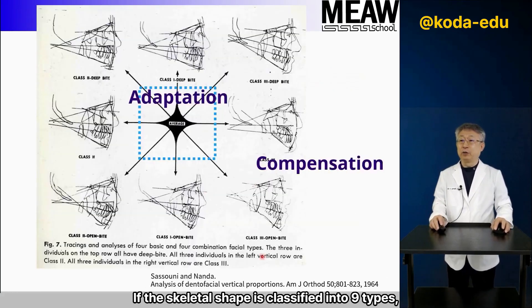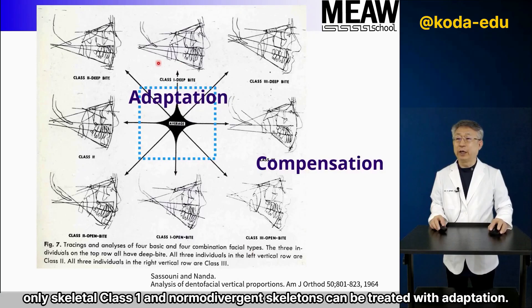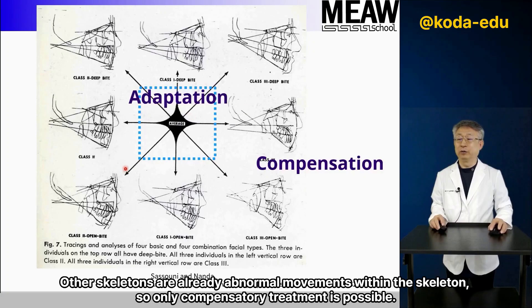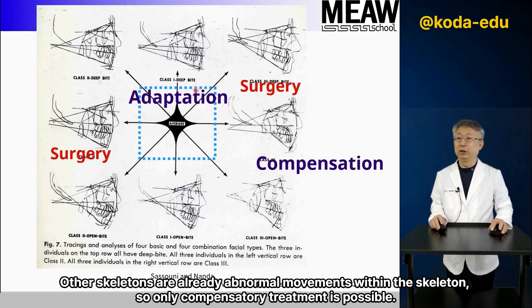If the skeletal shape is classified into 9 types, only skeletal Class 1 and normodivergent skeletons can be treated with adaptation. Other skeletal types are already abnormal, so only compensatory treatment is possible.